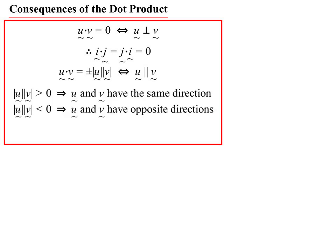If it turned out that the magnitude of u times the magnitude of v, if that was the positive one, then we know they're going in the same direction. If it turns out they're the negative one, then they're going in opposite directions. And the unit vectors? Well, i dot i magnitude squared, but the magnitude of the unit vector is 1, and 1 squared is 1. So i dot i and j dot j must be 1.